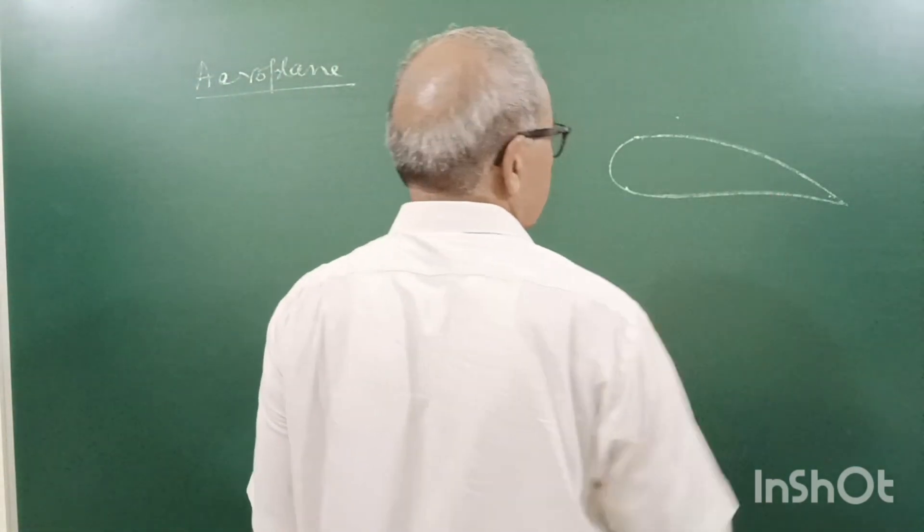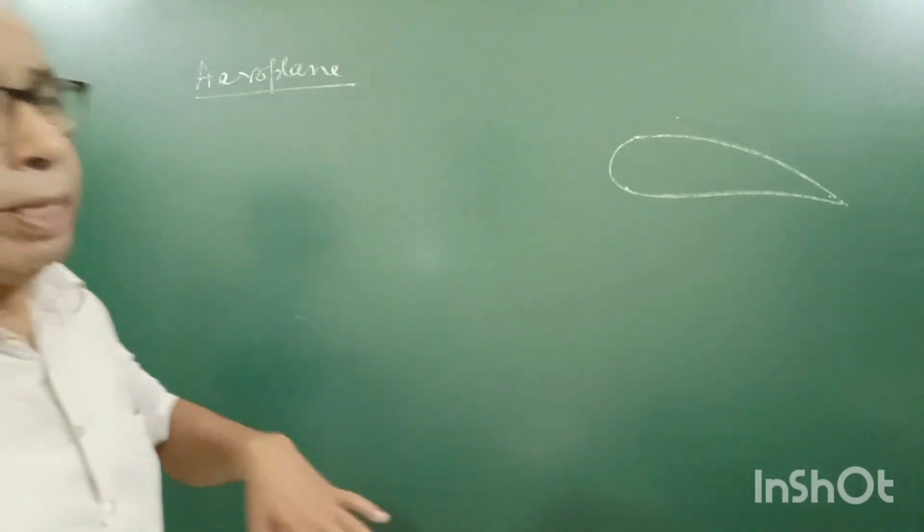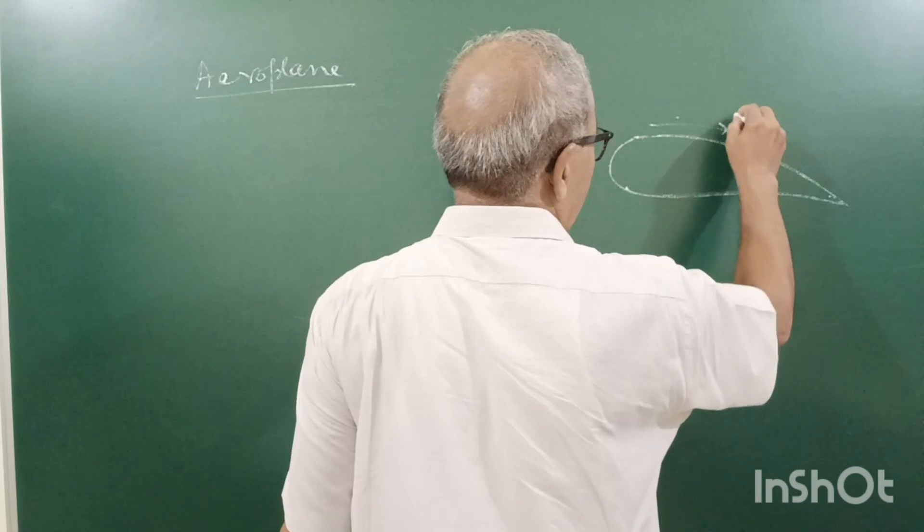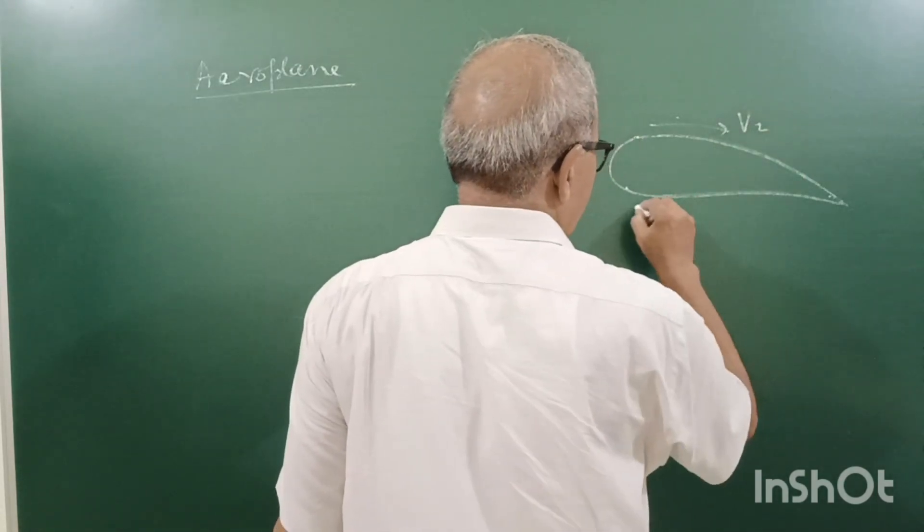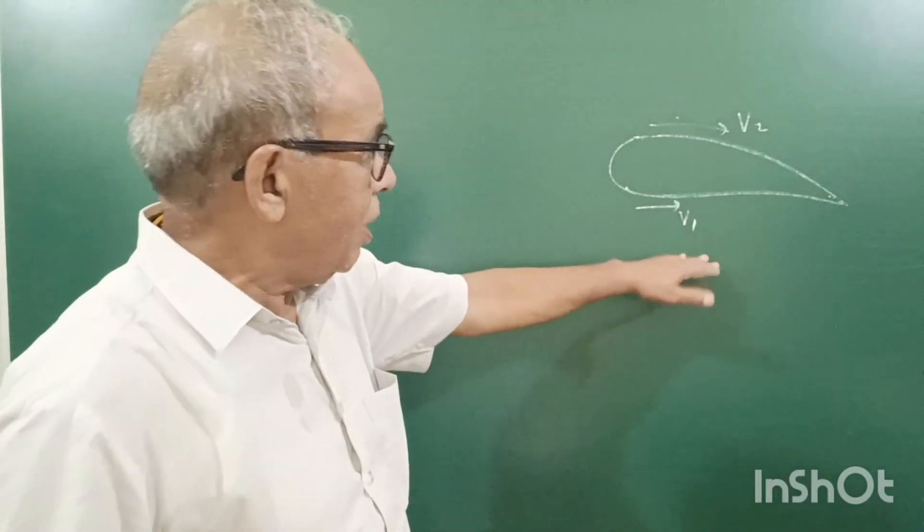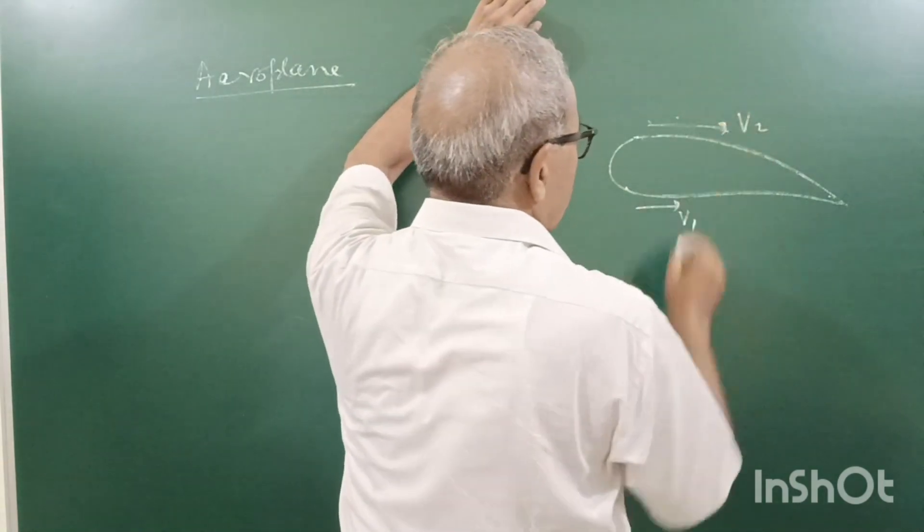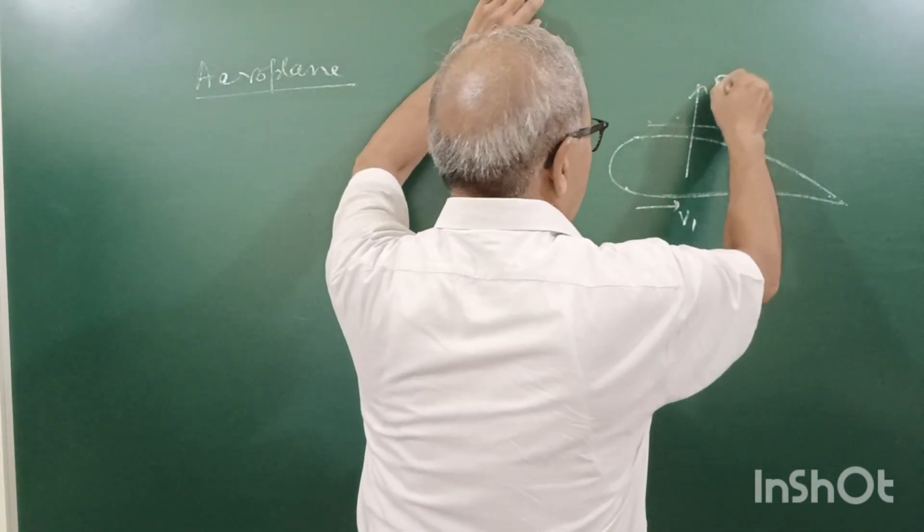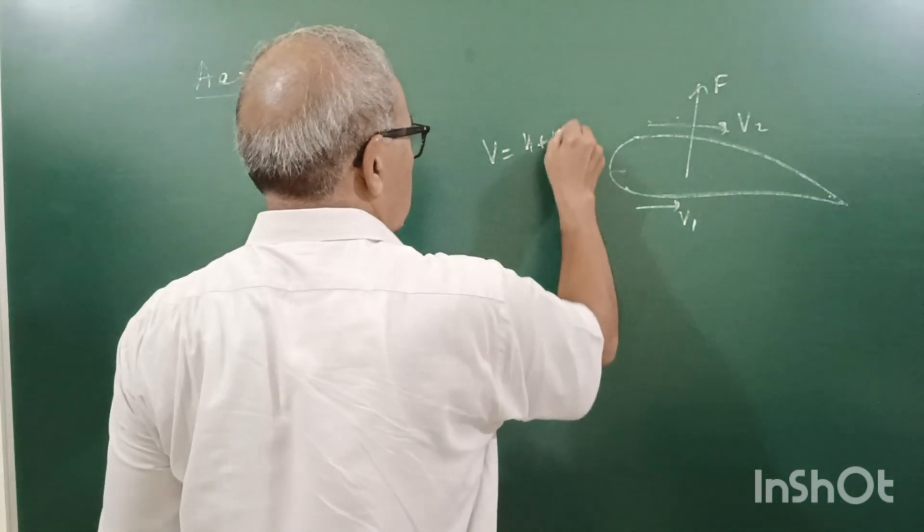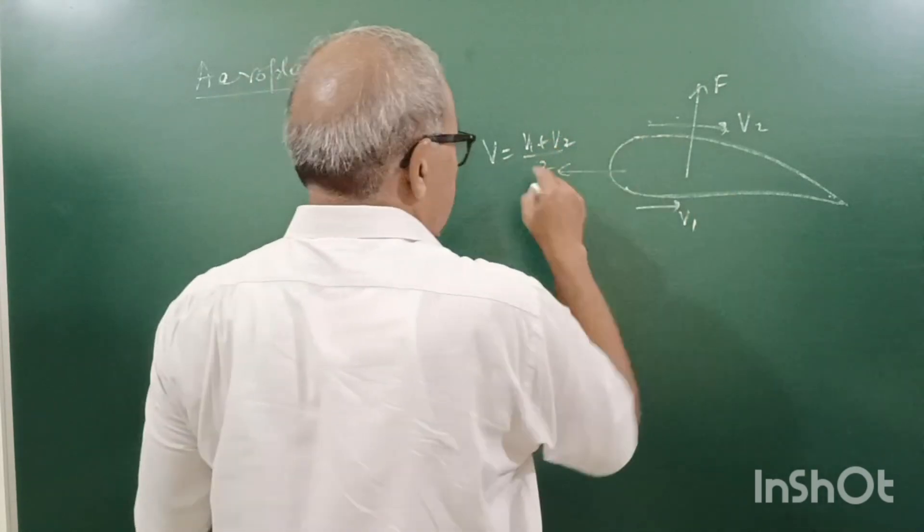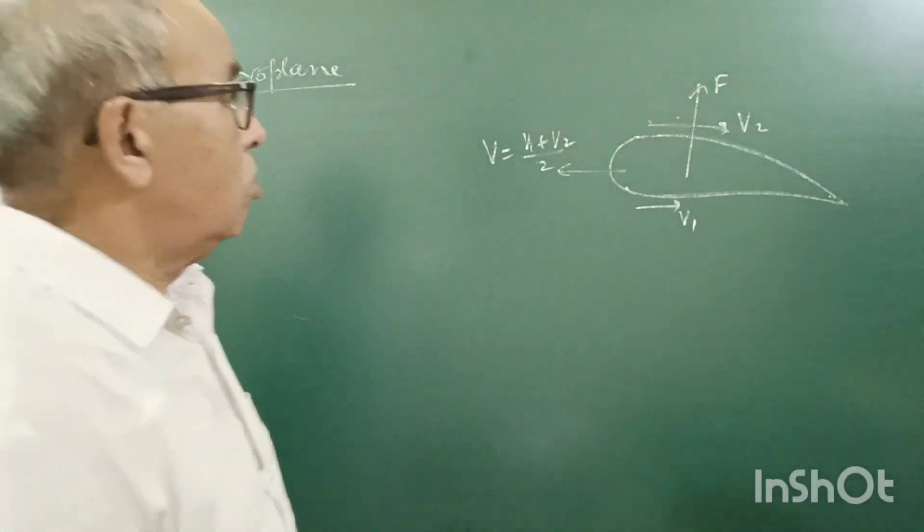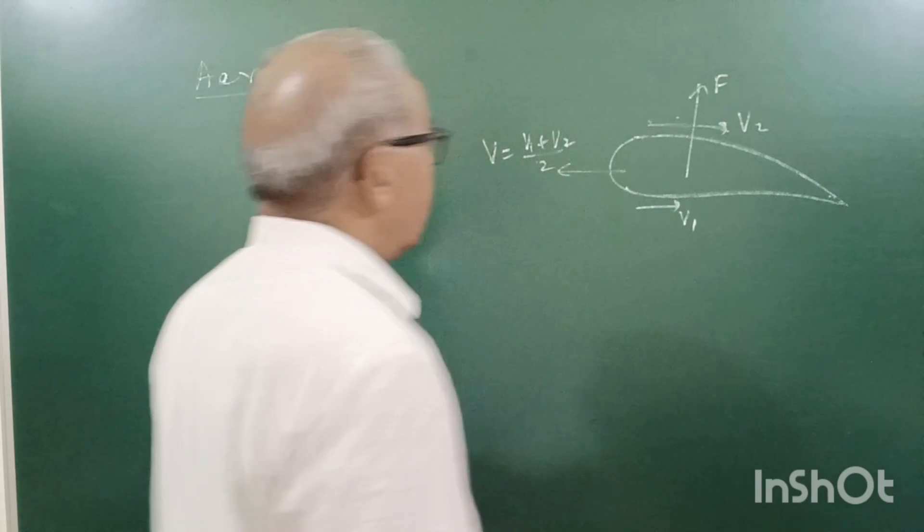So actually when we want to take it up or we want to make a horizontal flight, here velocity of air V2 will be faster than V1. Here velocity is low pressure is high, velocity higher pressure low. This creates a force. If it is flying in air with the average speed, V will be V1 plus V2 by 2, which will be the average of the upper and lower velocity.